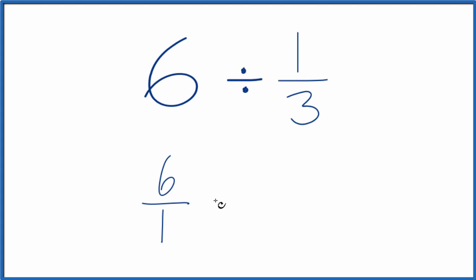Instead of division, let's multiply by the reciprocal of 1/3. To take the reciprocal of a number, you move the denominator to the top and the numerator to the bottom. So we end up with 3 over 1.